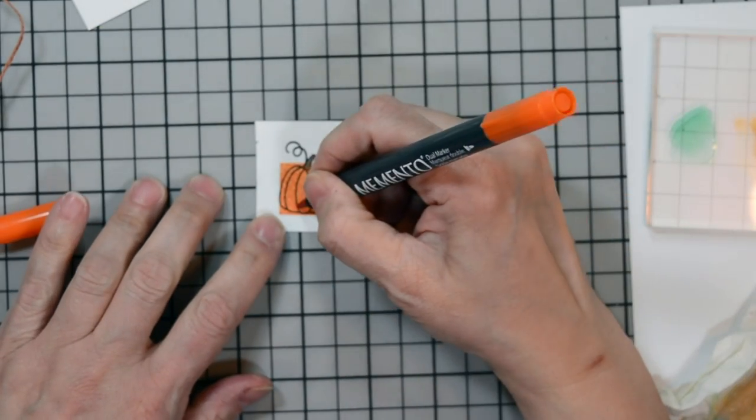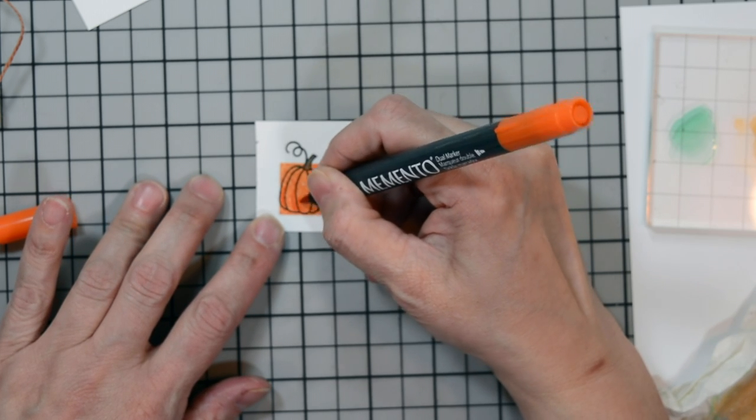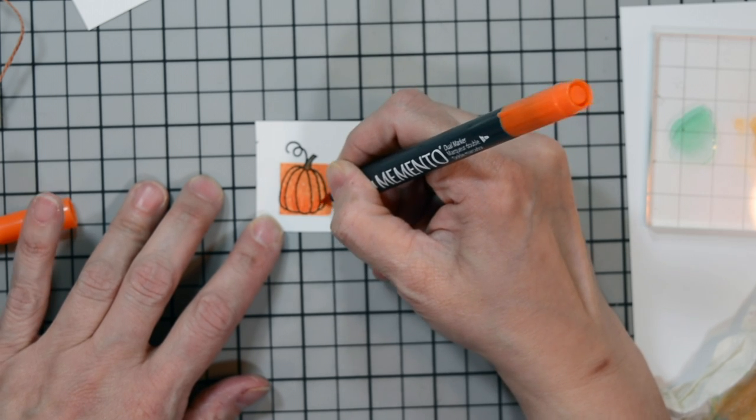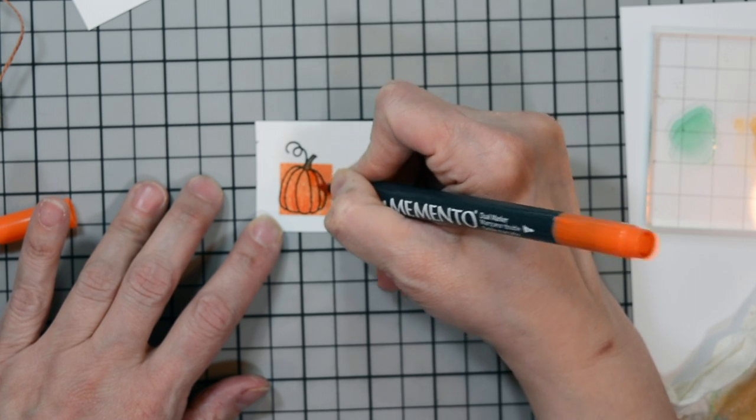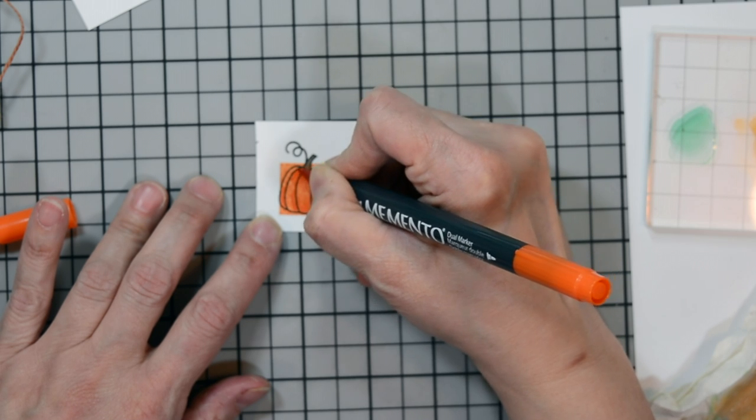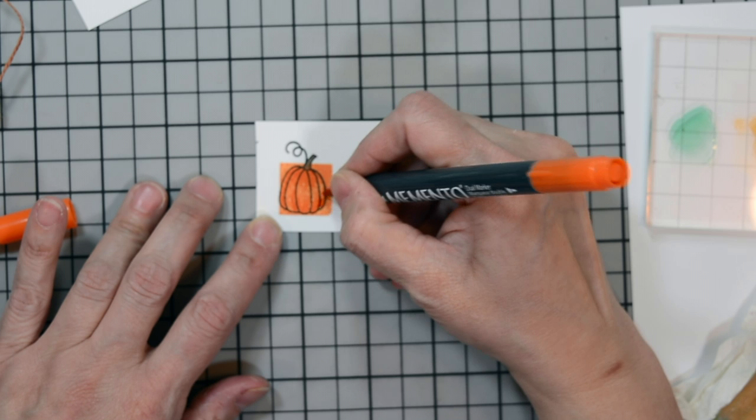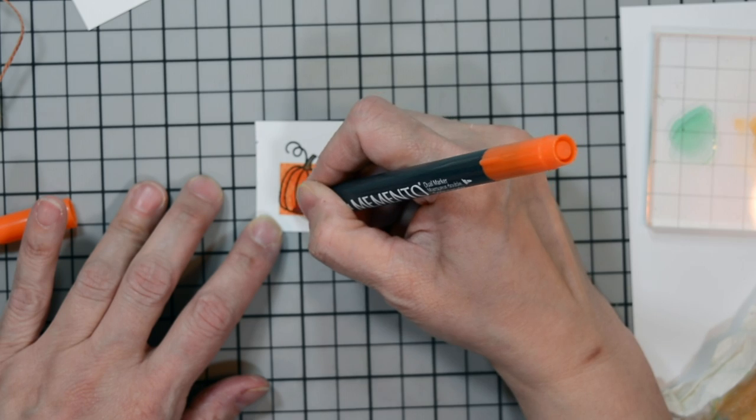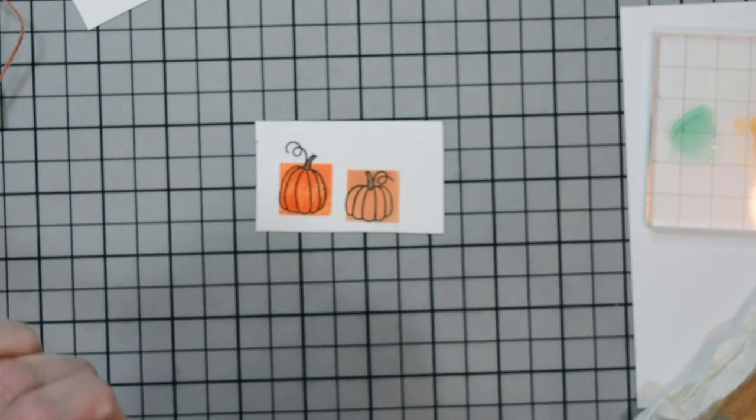I'm going to bring in the Memento Ink in Tangelo. And I'm just going to add some flick marks to my pumpkin here to give it a little more dimension. I'm just going from the top, flicking it down towards the bottom, and then from the bottom, flicking it up towards the top, leaving the center untouched. That'll create a nice little highlight. I also go over the stamp lines just to give a little more dimension.